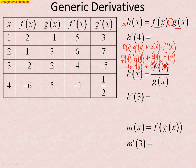At this point, it's just a matter of arithmetic, so we have negative 6 times a half, which is negative 3, plus 5 times negative 1, which is negative 5, so our answer is negative 8. This represents the slope of the h function at x equals 4.